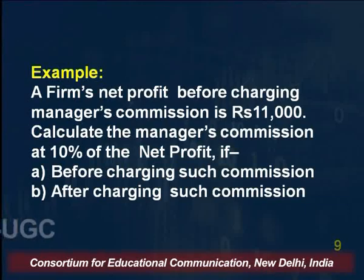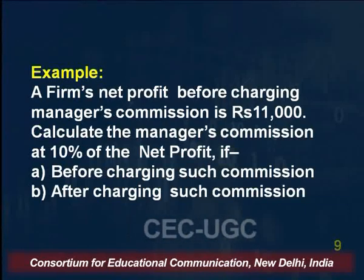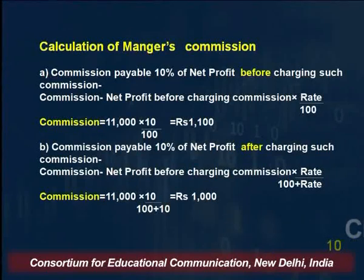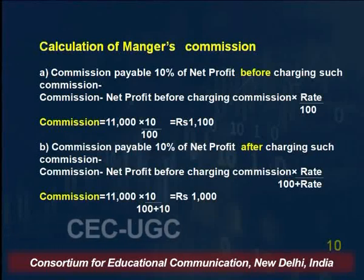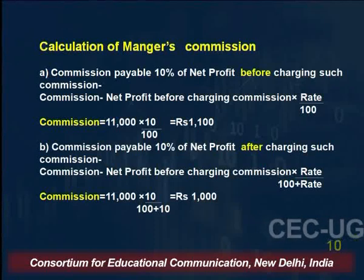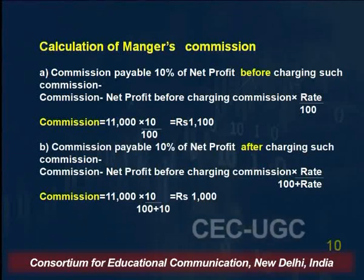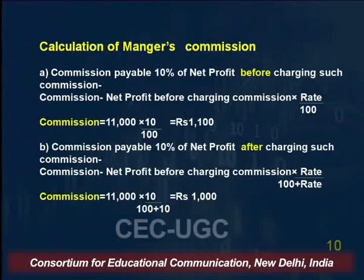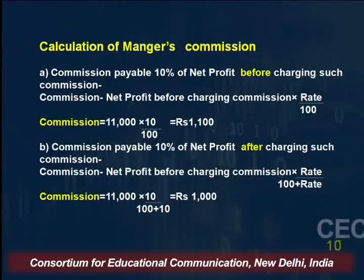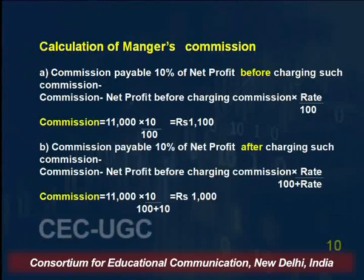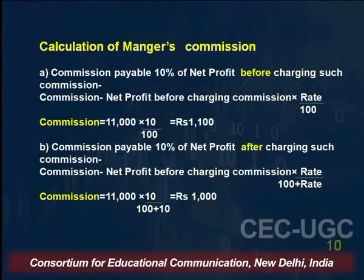A firm's net profit before charging manager commission is rupees 11,000. You need to calculate the manager commission at the rate of 10 percent, either before or after charging such commission. If the commission is before charging such commission, it would be 11,000 × 10/100 = rupees 1,100. But if the manager commission is payable at 10 percent of net profit after charging such commission, the commission would be 11,000 × 10 / (100 + 10) = rupees 1,000.